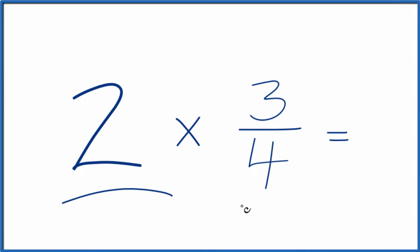Let's multiply 2 by 3 fourths. And essentially what we're doing, we're trying to double 3 fourths.